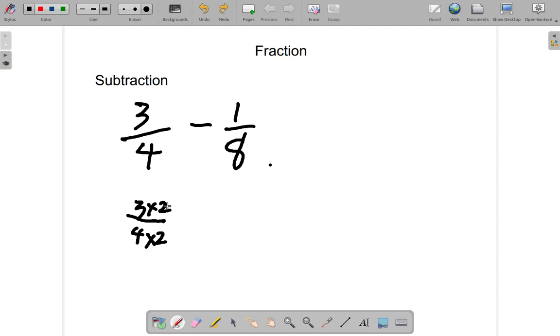So, it's the same as multiplying by 2 over 2. Same as multiplying by 1. So, the value of the fraction doesn't change. So, this becomes 3 twos, 6 over 4 twos, 8.